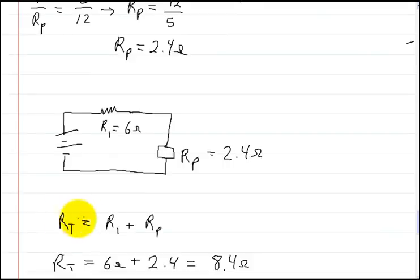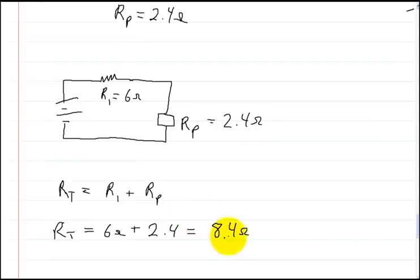The total resistance is equal to R1, which is this one, plus RP, which is the resistance in parallel. So you're going to get a total of 8.4 ohms, if you do it correctly.